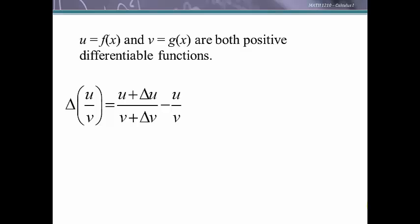We're going to look at a little change in the quotient, so we are going to take u plus delta u over v plus delta v and then subtract off the original quotient u over v. Let's get a common denominator. We would need to multiply this one by v and this one by v plus delta v.